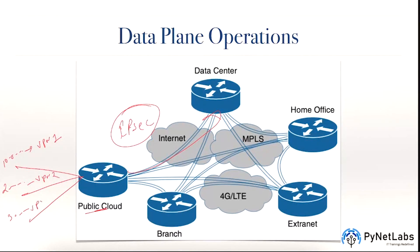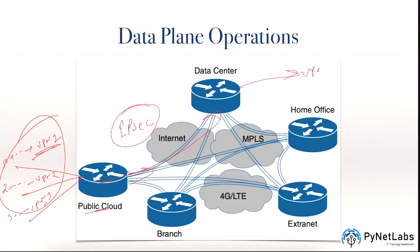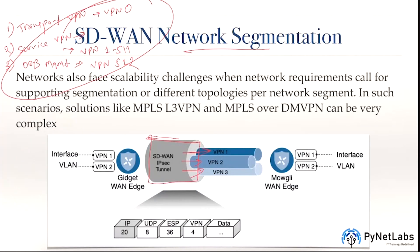All this VPN data will be segregated from each other when it communicates within the IPsec tunnel. VPN 1 on this side will only be able to communicate with VPN 1 on the other side. VPN 2 will only communicate with VPN 2, and VPN 3 with VPN 3. That's how segmentation is achieved.